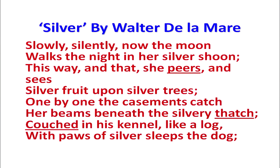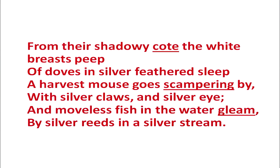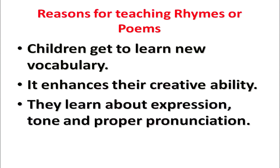We'll start with reciting a poem by Walter de la Mare, 'Silver.' Slowly, silently, now the moon walks the night in her silver shoon. This way and that she peers and sees silver fruit upon silver trees. One by one the casements catch her beams beneath the silvery thatch. Couched in his kennel like a log, with paws of silver sleeps the dog. From their shadowy coat the wide breasts peep of doves in silver feathered sleep. A harvest mouse goes scampering by with silver claws and silver eye. And moveless fish in the water gleam by silver reeds in a silver stream.